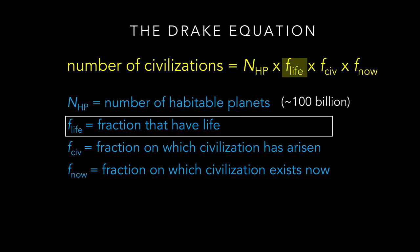The second term, f-life, is more difficult because Earth is the only world on which we know for sure that life arose, and we cannot do statistics with only one example. However, as discussed in your textbook, laboratory and geological evidence suggest that an origin of life may have been almost inevitable given the conditions on the early Earth, in which case f-life might be close to 1, meaning that most planets that are habitable would actually have life. Just keep in mind that until we actually discover life elsewhere, it remains possible that f-life is actually close to zero, in which case Earth might be unique in having life.